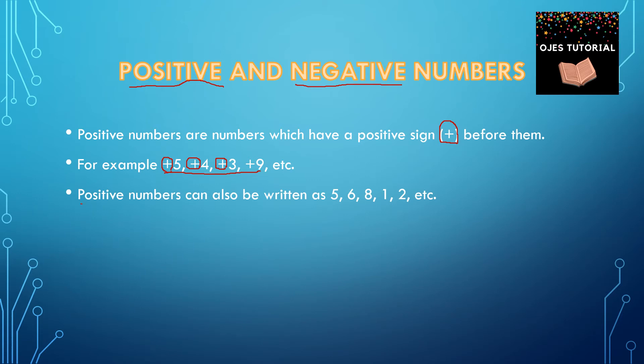Positive numbers can also be written as 5, 6, 8, 1, 2, etc. In these examples, if we remove the plus sign, they will still remain positive numbers.